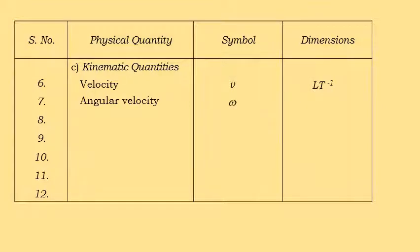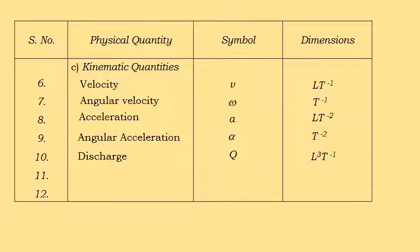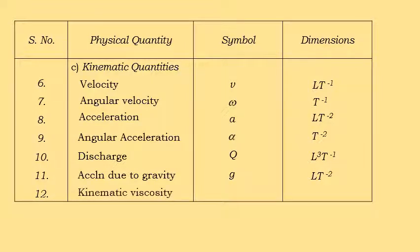Angular acceleration also has dimensions T⁻². Discharge, denoted by Q, has unit meter cubed per second, giving dimensions L³ T⁻¹. Acceleration due to gravity, G, has dimensions L T⁻². Kinematic viscosity, nu, has unit meter squared per second, giving dimensions L² T⁻¹.